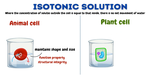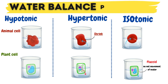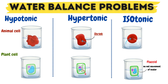When a plant cell is placed in an isotonic solution, where the concentration of solutes outside the cell is equal to that of inside, there is no net movement of water. However, the plant cell becomes flaccid. Flaccidity occurs because the cell is not turgid — the cell's contents are no longer pressing firmly against the cell wall. This was an overview of water balance problems. Thank you for watching, and do like, share and subscribe to my channel.